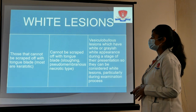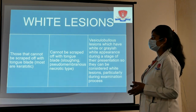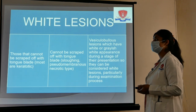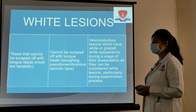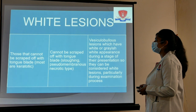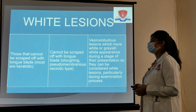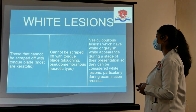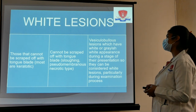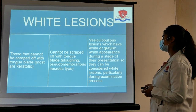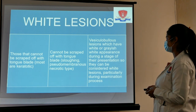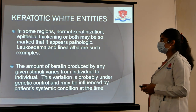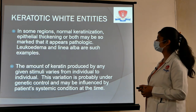Another classification of white lesions is based on whether the lesion can be removed with a tongue blade. First are lesions that cannot be shaved off — these are mostly keratotic due to hyperkeratosis. Second are lesions that also cannot be shaved off but show sloughing or pseudomembranous necrotic type, such as candidiasis. Third are vesiculobullous lesions with a whitish or grayish-white appearance during their presentation stage.